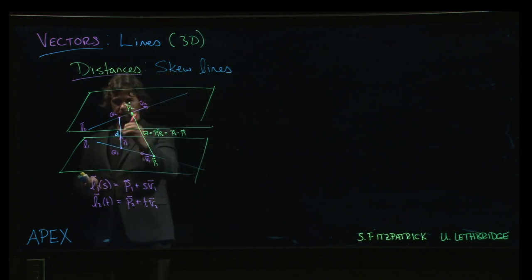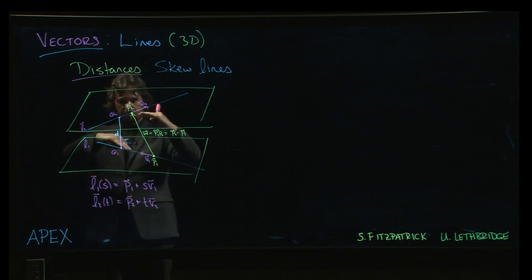These two parallel planes has got to be the common normal vector for both. It's perpendicular to both. But in particular, it's got to be orthogonal to both of these vectors, because these two vectors are direction vectors for lines that are in these planes. So N is orthogonal to V1 and V2.